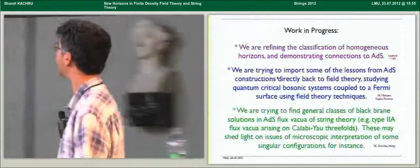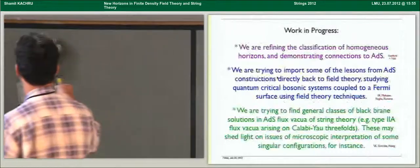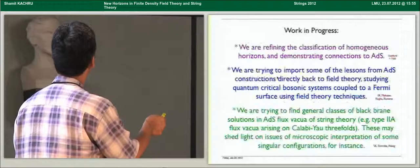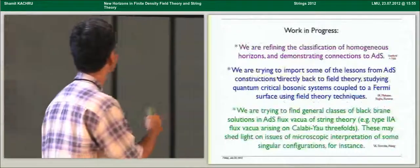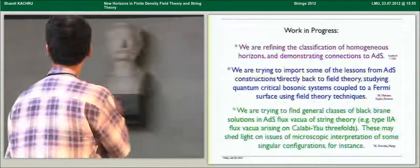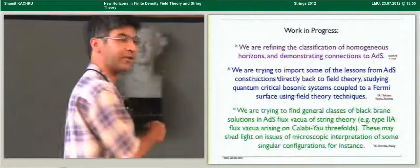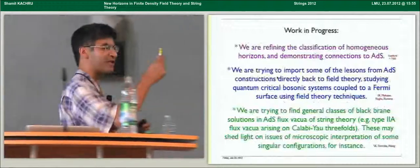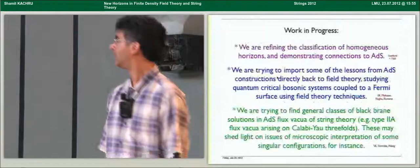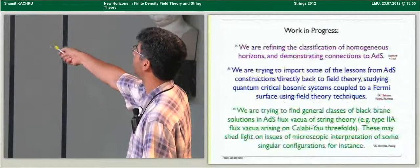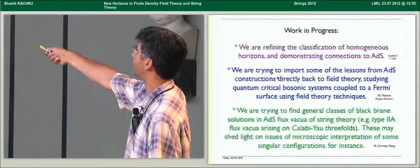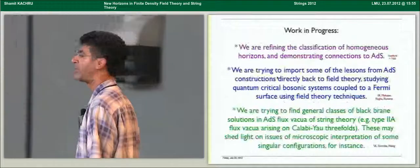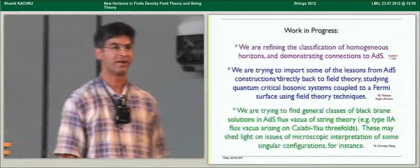So let me close with what we're doing now. As I said, we're refining the classification of these horizons. The real algebraic structure is richer than what I indicated, but I gave you a sketch. I think the thing that I'm most excited about is really some work I'm doing with condensed matter theorists at Stanford, where we're trying to import some of the lessons from AdS constructions directly back into field theory. Instead of using a geometry, we're directly studying some quantum-critical bosonic systems coupled to a Fermi surface using the techniques of renormalization group at a Fermi surface. And I have to say that if you're looking for rich problems in field theory where the payoff to effort ratio might be very high, I think this is an excellent place to look. And finally, with some students and postdocs at Stanford, we're trying to find general classes of black-brane solutions in flux vacua on Calabi-Yau three-folds whose main function will be to shed light on issues of microscopic interpretation both for the AdS2 entropy that I mentioned before and for some singularities that arise in these configurations that I also mentioned. So thank you for your attention.